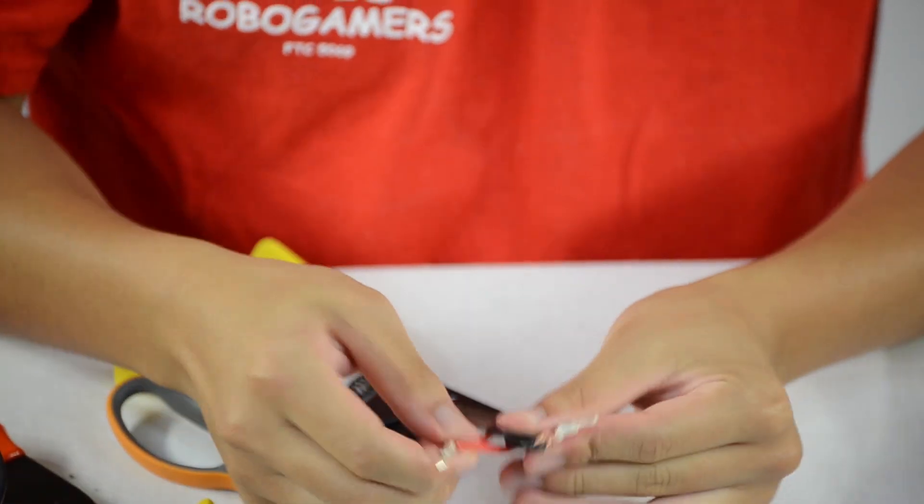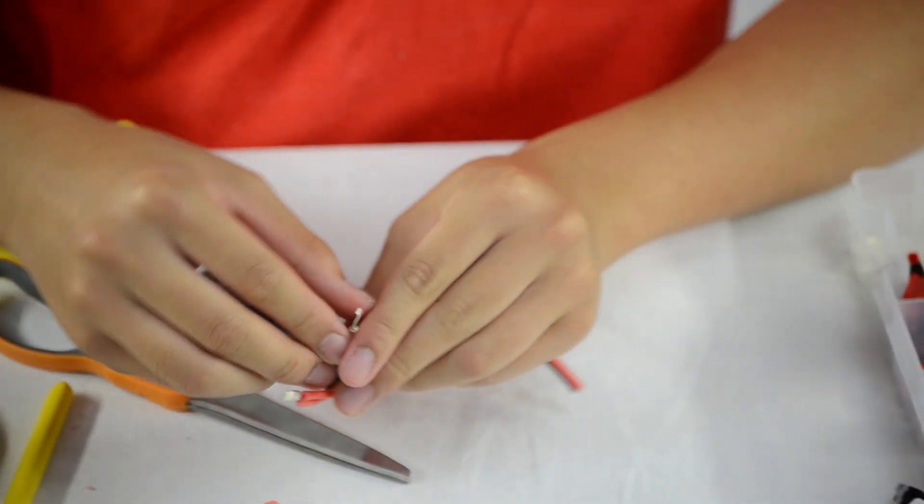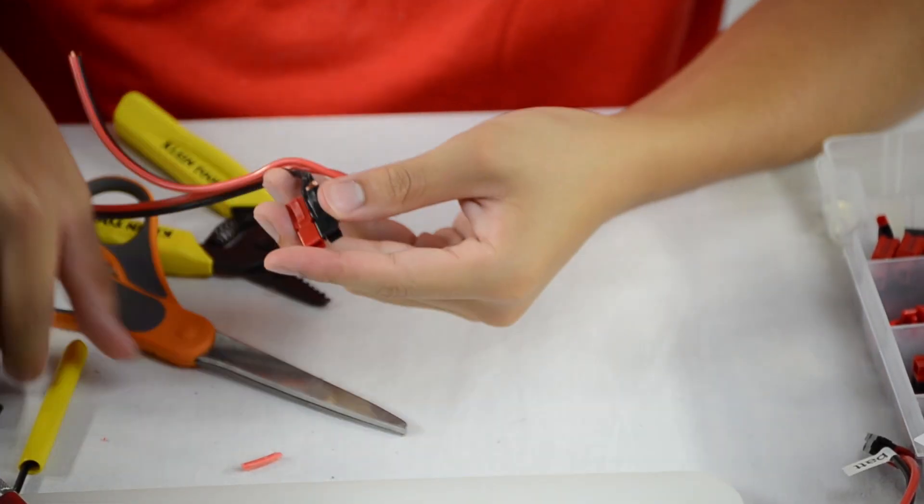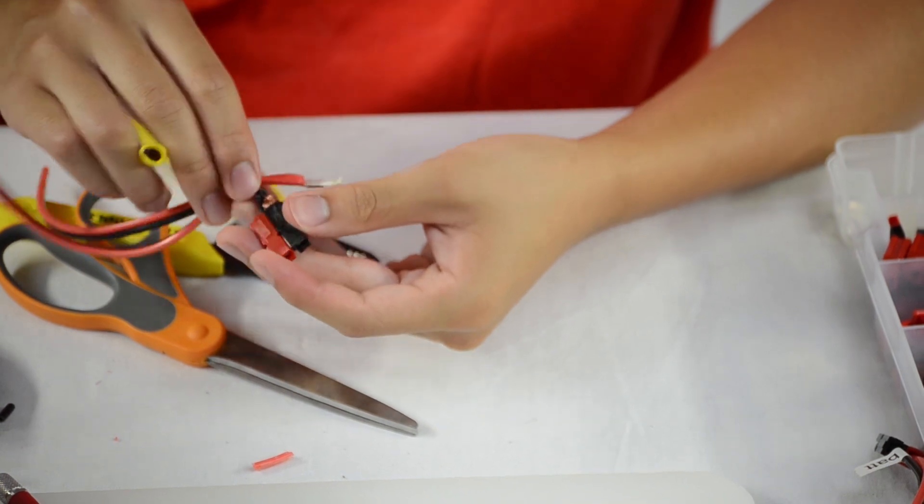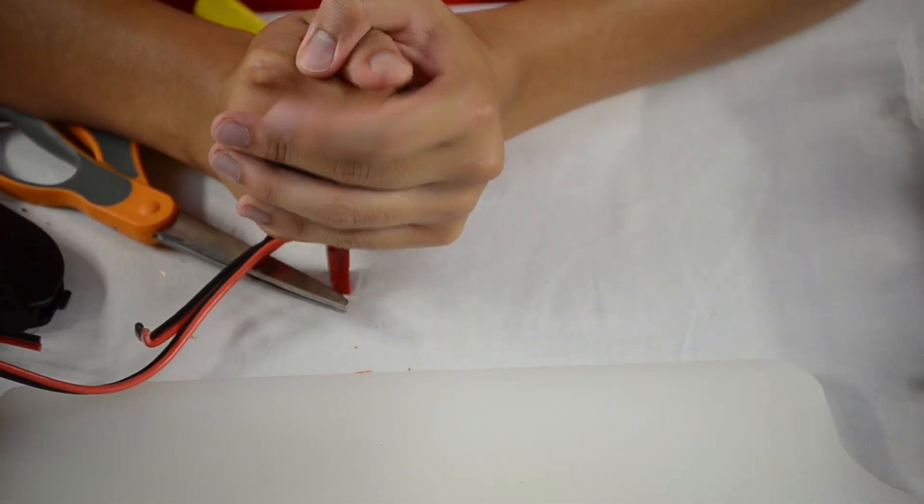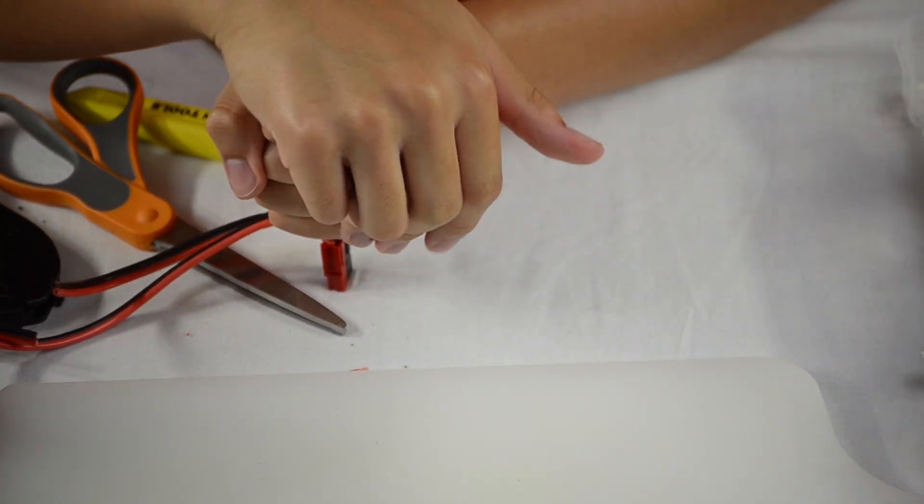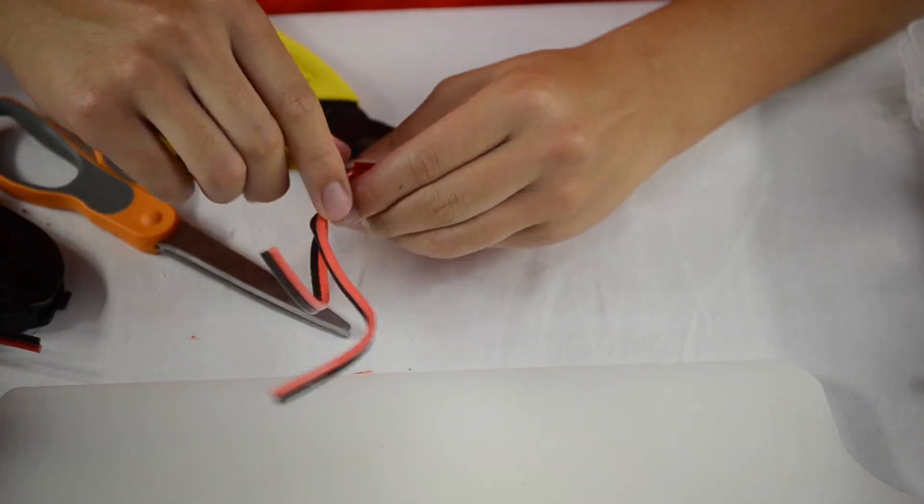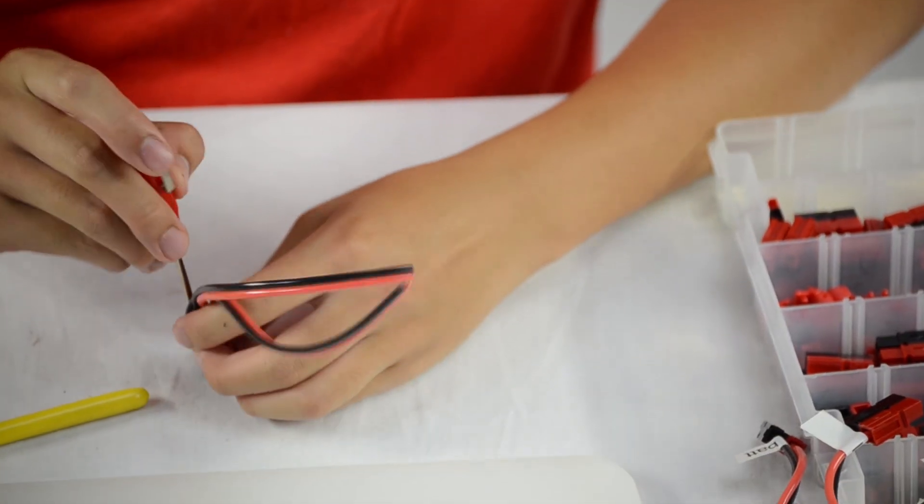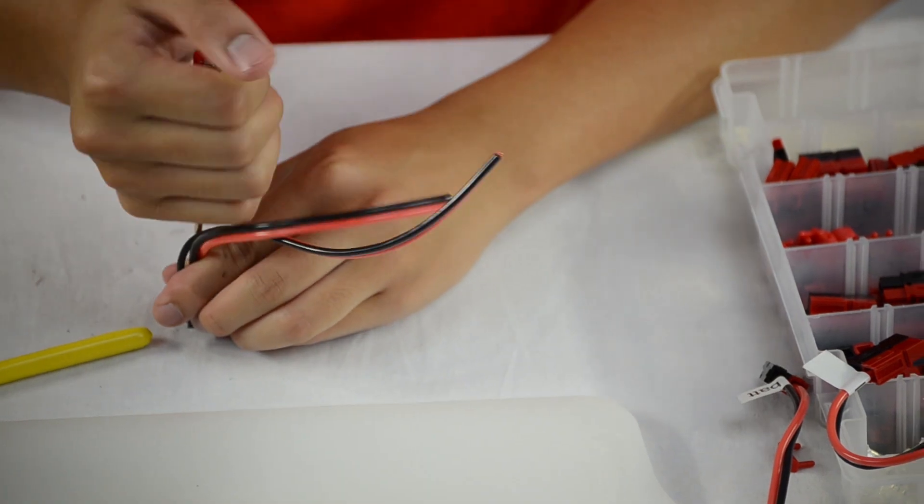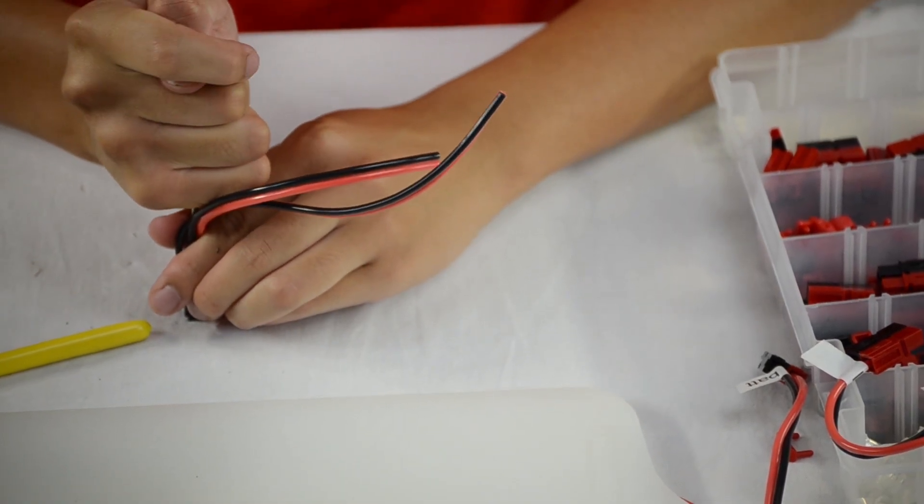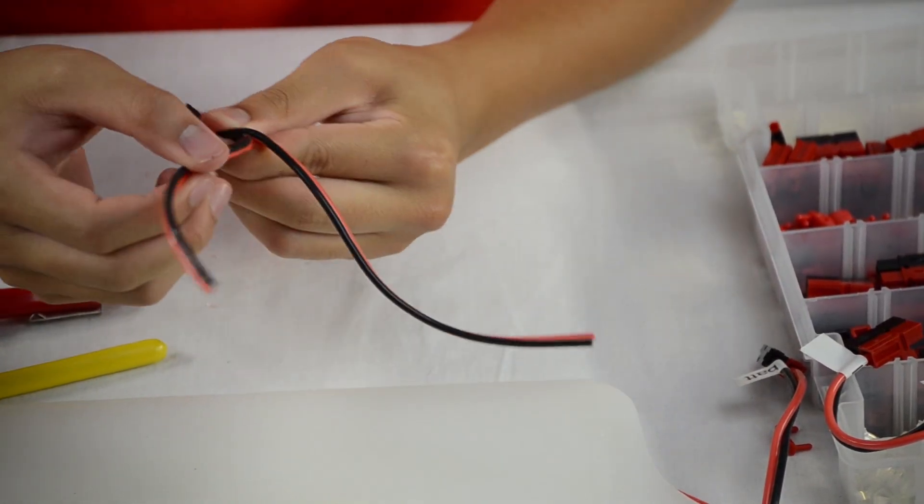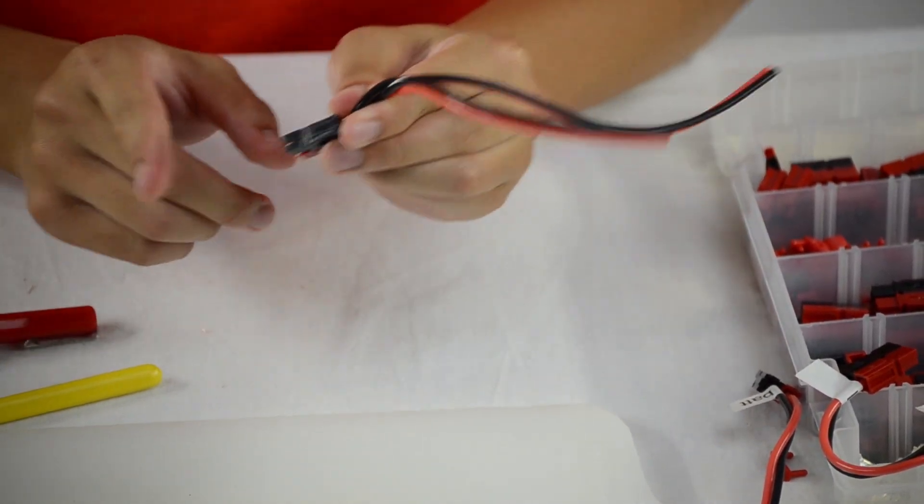And once these two are crimped, you can just simply slide it into a plug. So, one side in, now just simply do the other. All right, and once you get that side in, you now have a connector for your middle controllers.